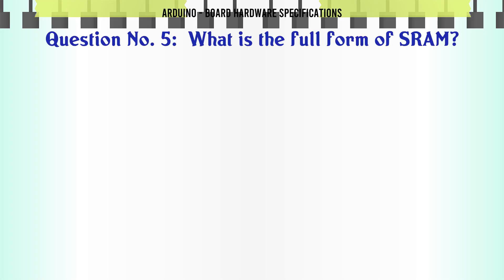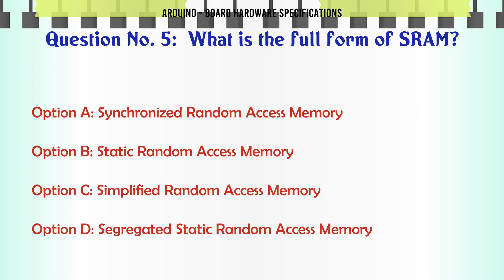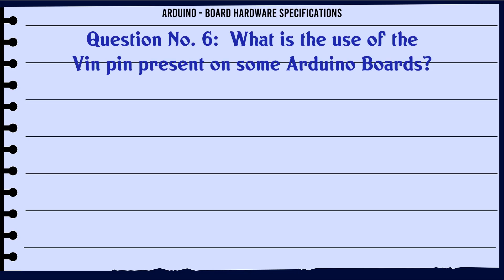What is the full form of SRAM? A: Synchronized random access memory. B: Static random access memory. C: Simplified random access memory. D: Segregated static random access memory. The correct answer is: Static random access memory.